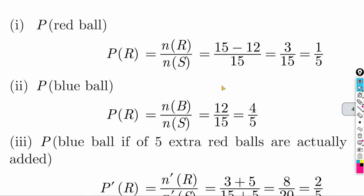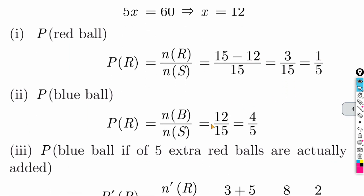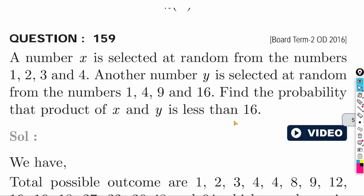With x = 12 blue bowls, red bowls = 15 - 12 = 3. Probability of red bowl = 3 by 15 = 1 by 5. Probability of blue bowl = 12 by 15 = 4 by 5.